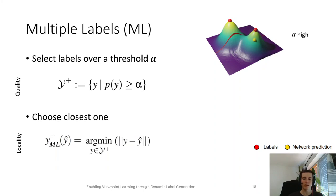And we optimize towards the label which is closest to the prediction, thus enforcing a locality in the decision and resolving the label ambiguity. However, if we choose a smaller alpha, we might find more clusters, and if we now evaluate the network and choose the closest label.